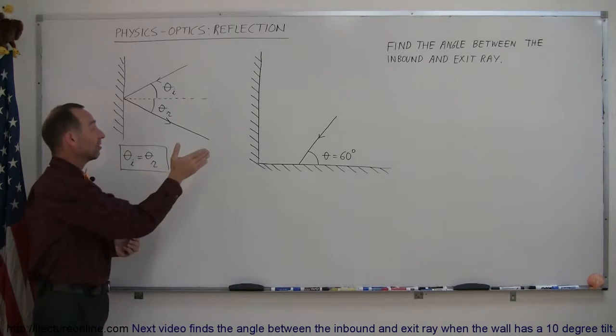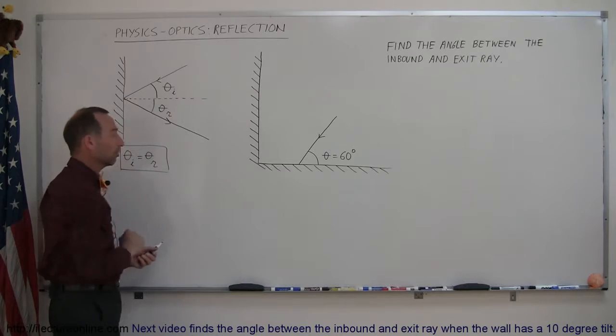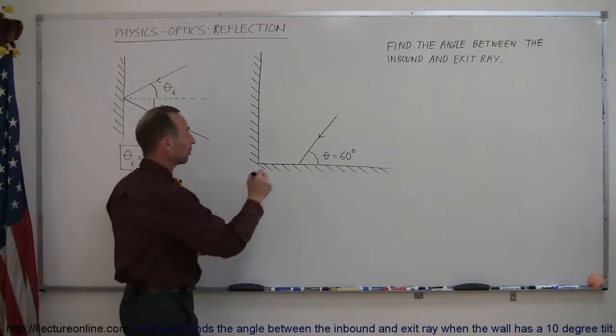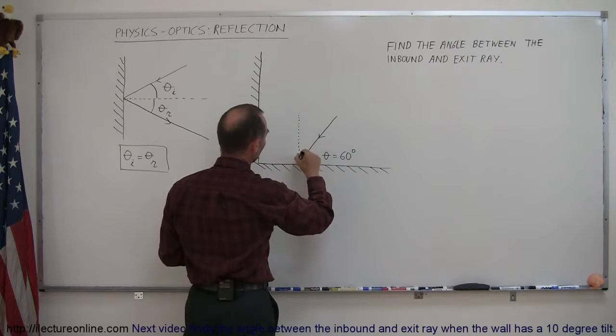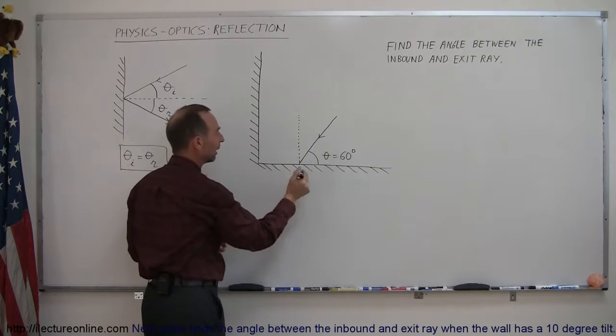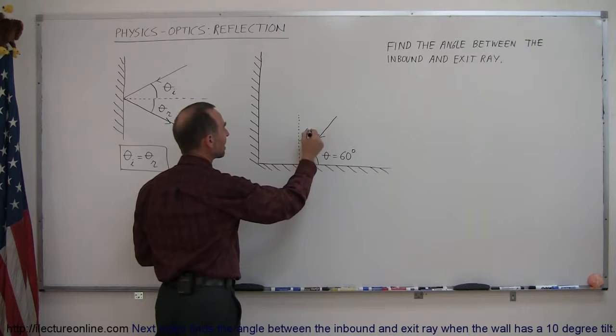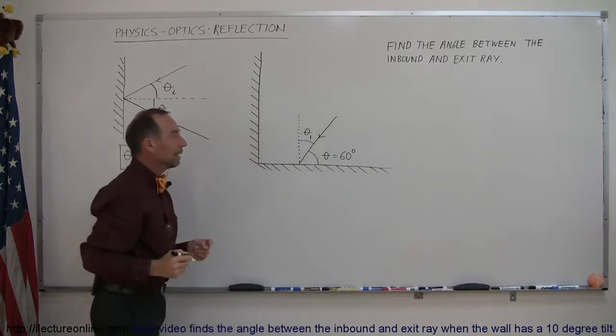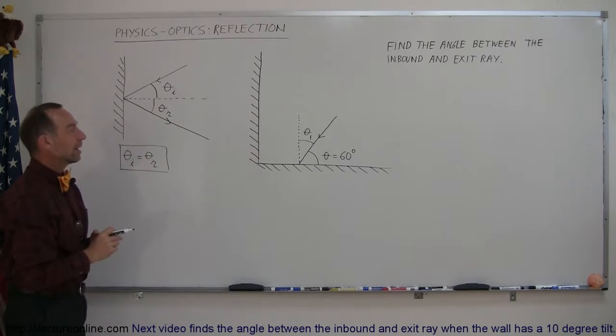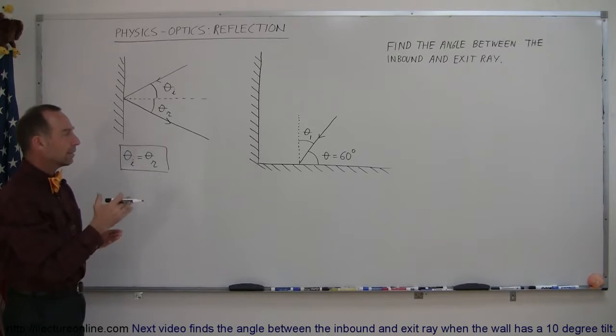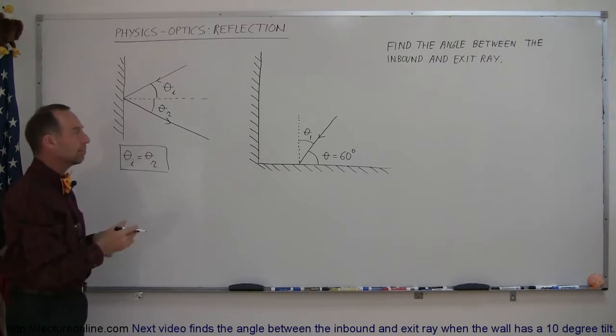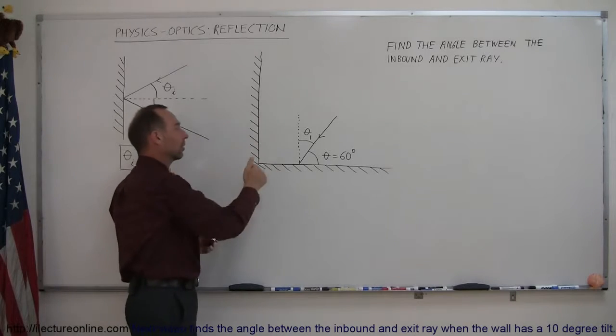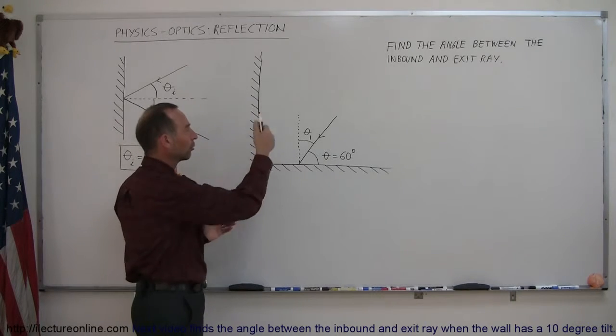So what we're going to do is in each case, at every reflection, we're going to use this principle, and we're going to always draw the normal line to the surface where the reflection occurs. So here's the normal, and then we define this as the inbound ray angle or the incident angle. And I like to name them or number them like 1, 2, 3, 4, 5, 6, so the inbound angle is 1, the exiting angle is 2, and so forth, throughout all the surfaces.